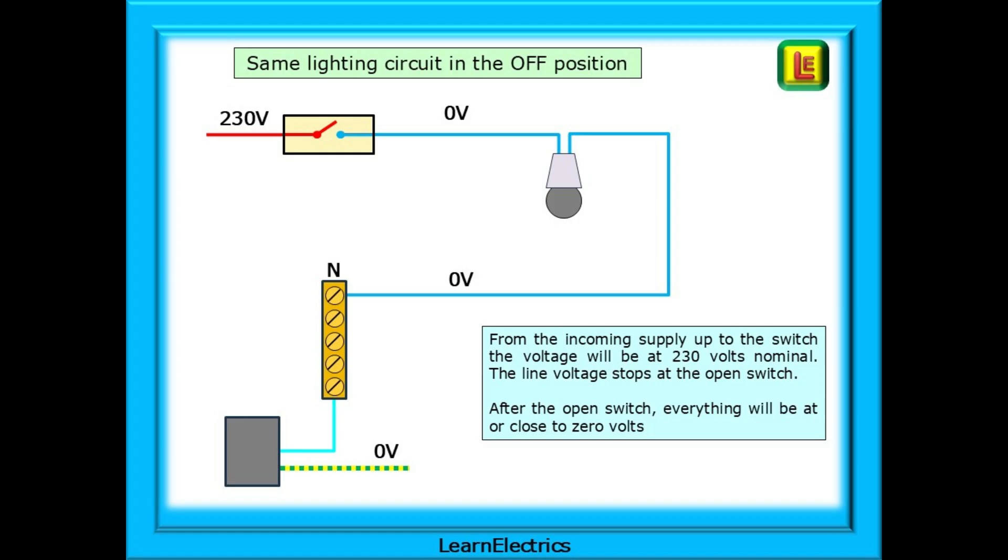Now the same lighting circuit in the off position with the switch open. From the incoming supply up to the switch would be at 230 volts nominal. The line voltage stops at the open switch. After the open switch, everything will be at or close to 0 volts.